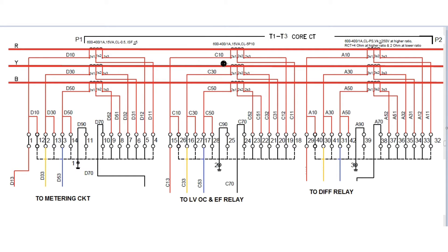The specification for the protection overcurrent core: CT ratio is the same, rated burden is 15VA, and class is 5P10. What does 5P10 mean? If 10 times the rated current flows on the HV side under rated burden condition — that is, the secondary rated burden is 15VA — then the maximum error will be 5%.